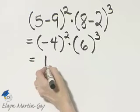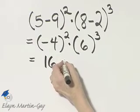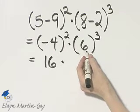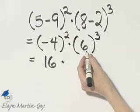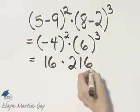So negative 4, that quantity squared, gives us 16 times what is 6 cubed? That's 6 times 6 times 6. 6 times 6 is 36, and 36 times 6 is 216.